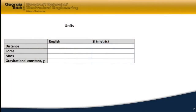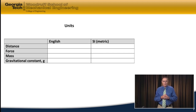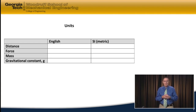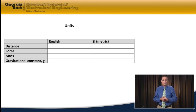The last thing I want to do in this module is talk about the system of units we're going to use. There are two systems: the English system of units and the international system of units, sometimes called the metric system of units, abbreviated SI. I'd like you to pause and write down what are the typical units of measurement used in these systems for measuring distance, force, and mass, and also write down the gravitational constant for each system.